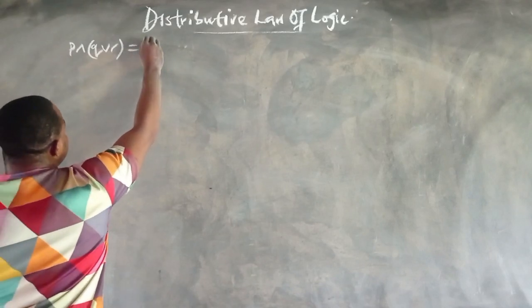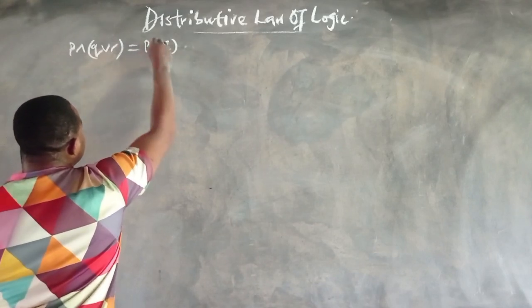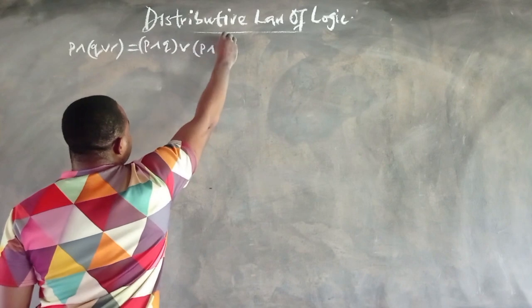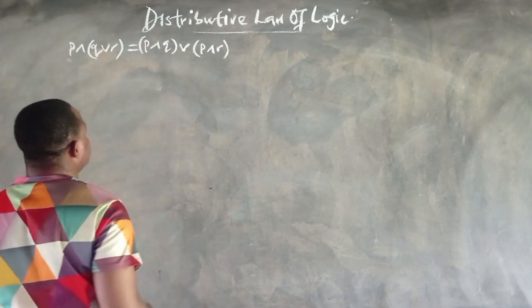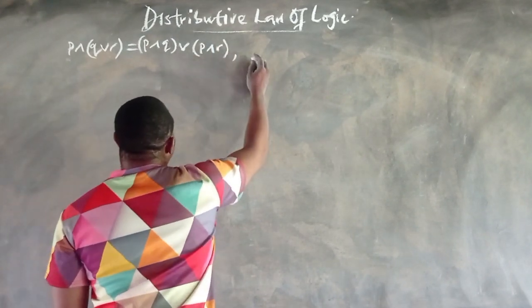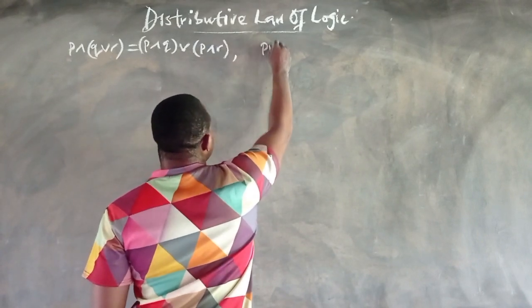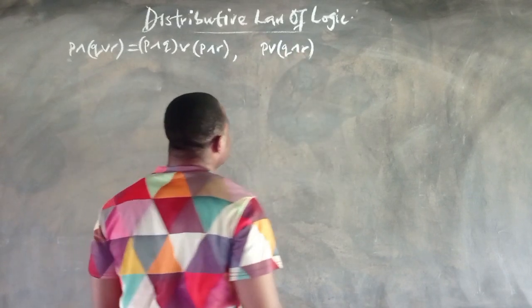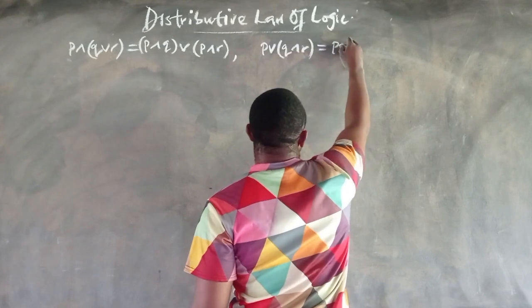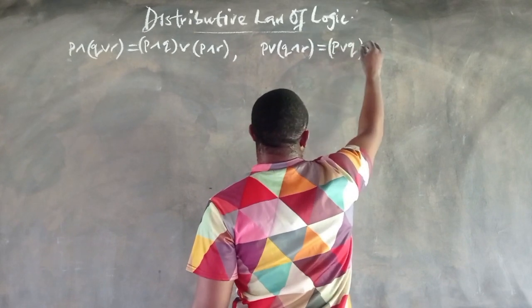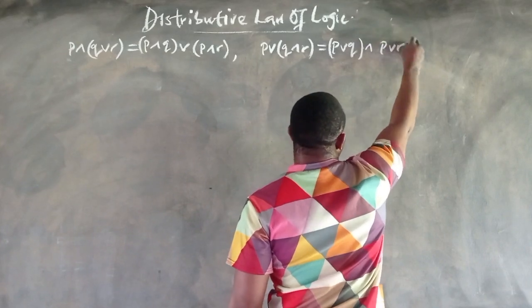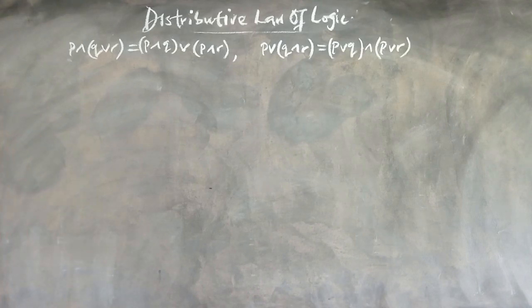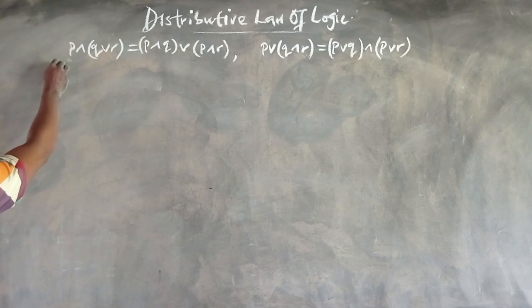It's comprised of two parts. I have been making lessons on the different algebraic laws of logical statements, so you can look into them. The first part states: P∧(Q∨R) = (P∧Q)∨(P∧R). The second part states: P∨(Q∧R) = (P∨Q)∧(P∨R).